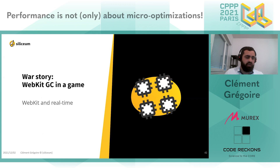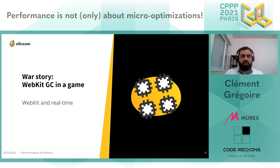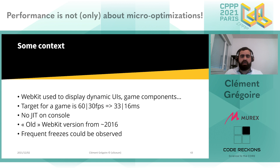Now I'll tell you a story and walk you through the process of optimizing WebKit, which was the equivalent of a web browser inside a game. WebKit was used to display not only UIs but also game components — things like the position of your character, its health, etc. — that change really often. That's not really what the web was designed for in the first place, but that's how it was. So we needed to optimize that.